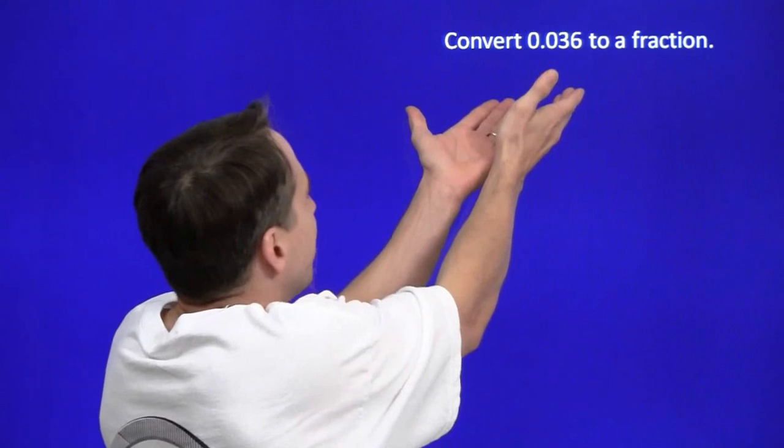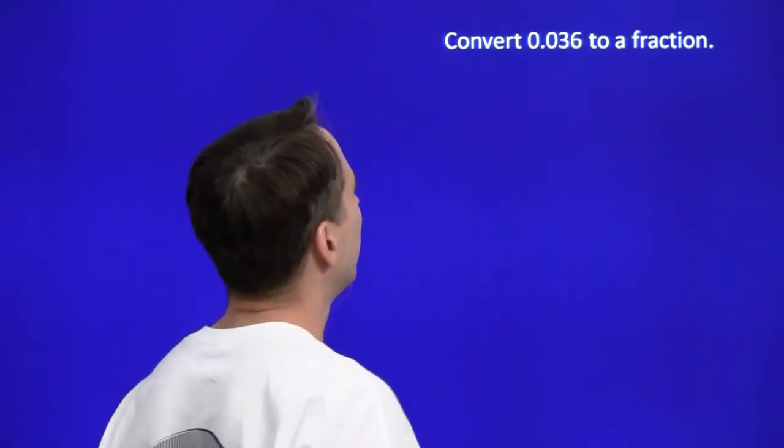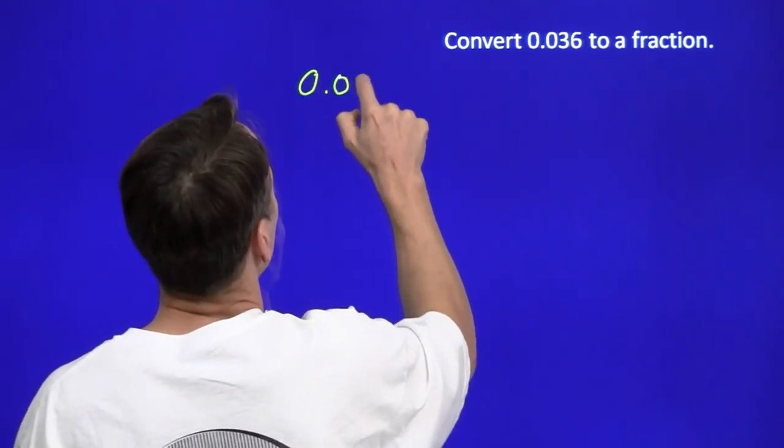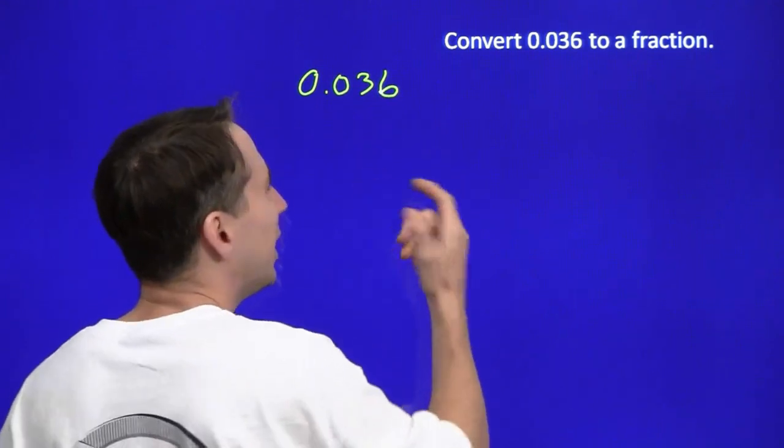Convert 0.036 to a fraction? Why would I want to do that? I already know what the number is. It's 0.036. Whatever, they asked me to do it. I'll go ahead and knock one of these off. How are we going to do this? Start with 0.036. I want to make it a fraction.